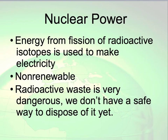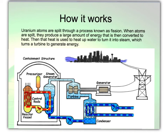Nuclear energy is another alternative source — not renewable, just alternative. It uses energy from the fission of radioactive isotopes to make electricity. This is a non-renewable resource and produces radioactive waste that is very dangerous. Uranium atoms are split in a process known as fission; when that split happens, it creates lots of heat. That heat produces steam, steam turns a turbine, and the turbine generates electricity.